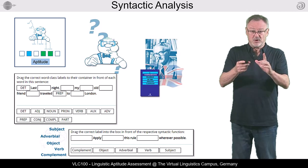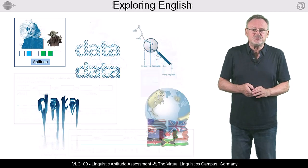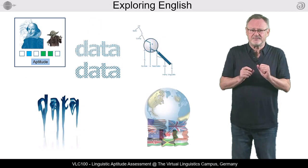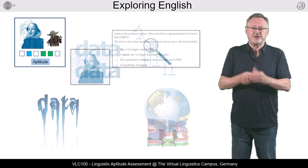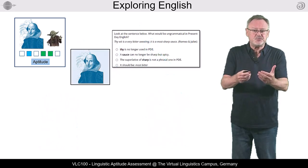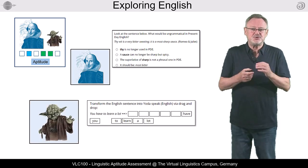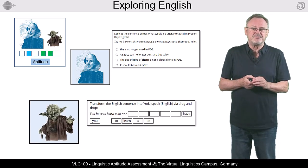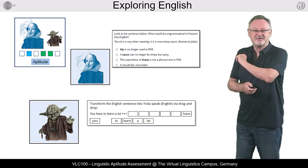Furthermore, you can show your abilities to use deviant data. We want you to look at the English that Shakespeare used 400 years ago, and we give you the chance to use a constructed rule system of a famous movie character.